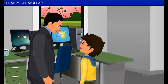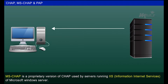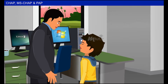Similar to the Linux user authentication protocol, MS-CHAP is a proprietary version of CHAP used by servers running IIS — Internet Information Services — of Microsoft Windows Server. Sendal continued to illustrate more about the types of user authentication.